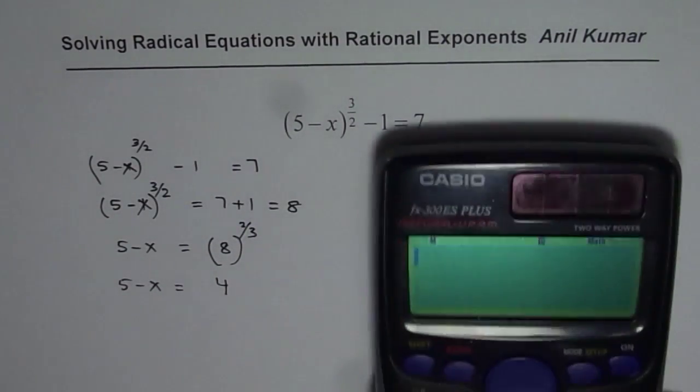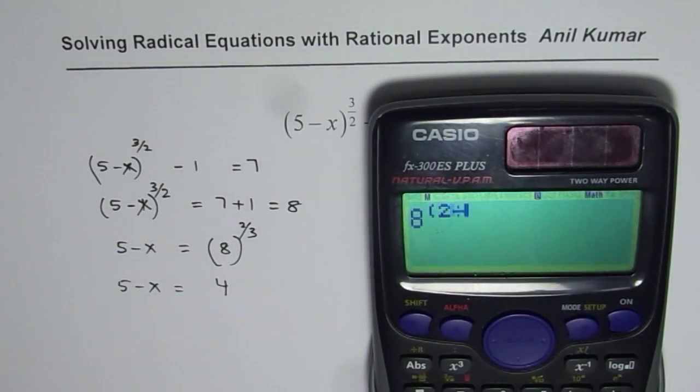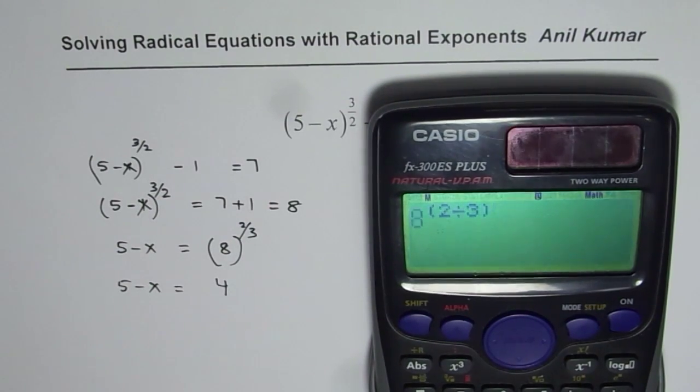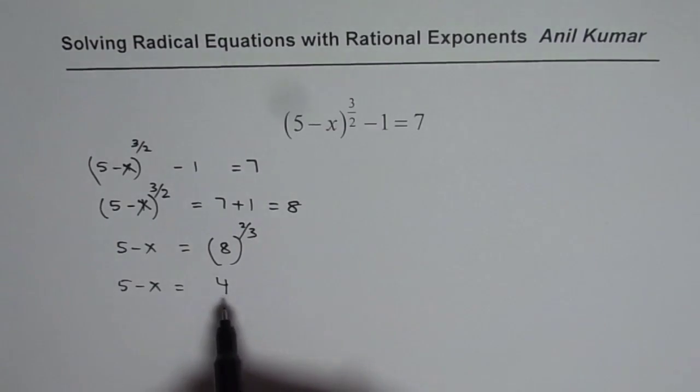At this stage, you can also use your calculator. You can enter 8 to the power of, within brackets, 2 divided by 3, bracket close, equals. So you get 4 as your answer.